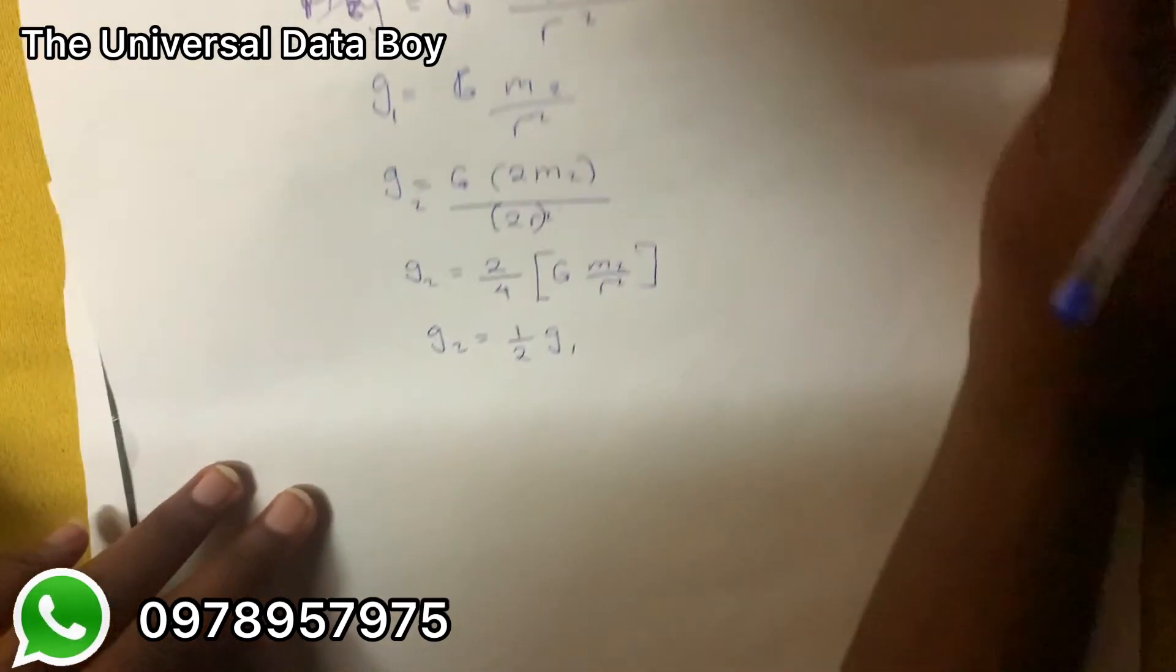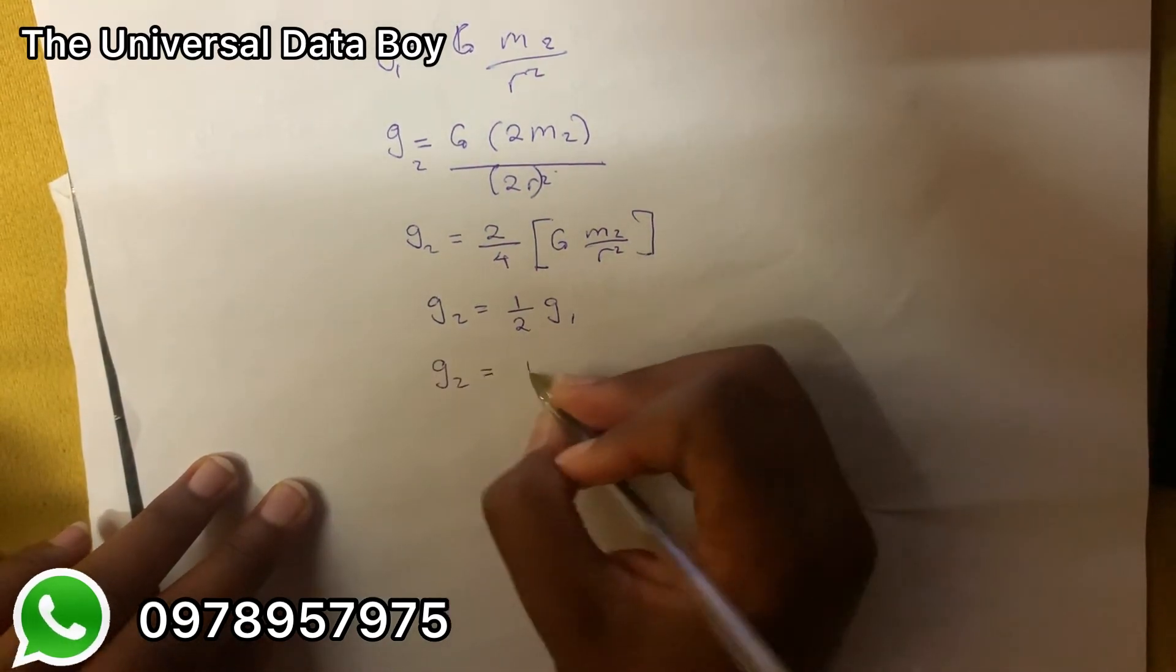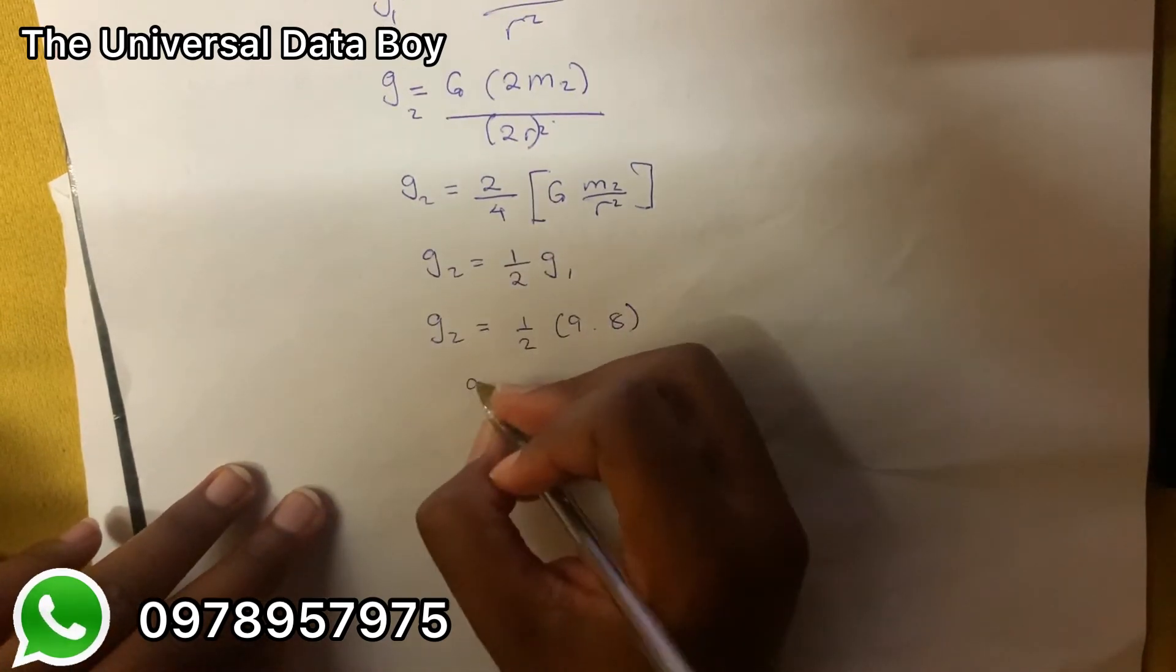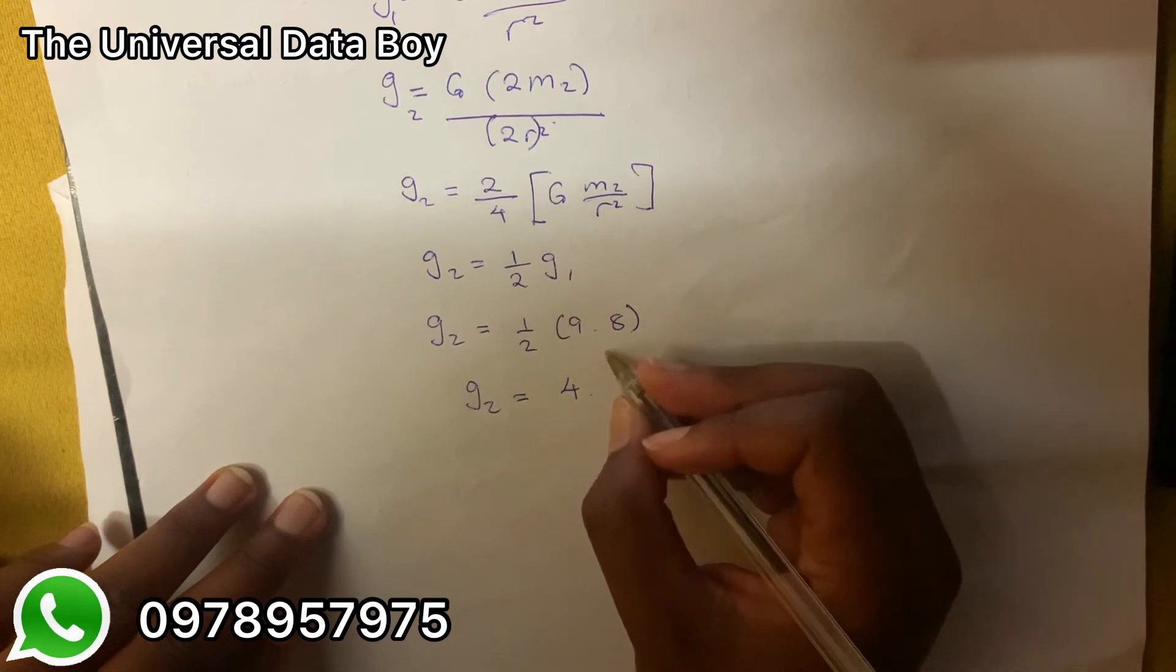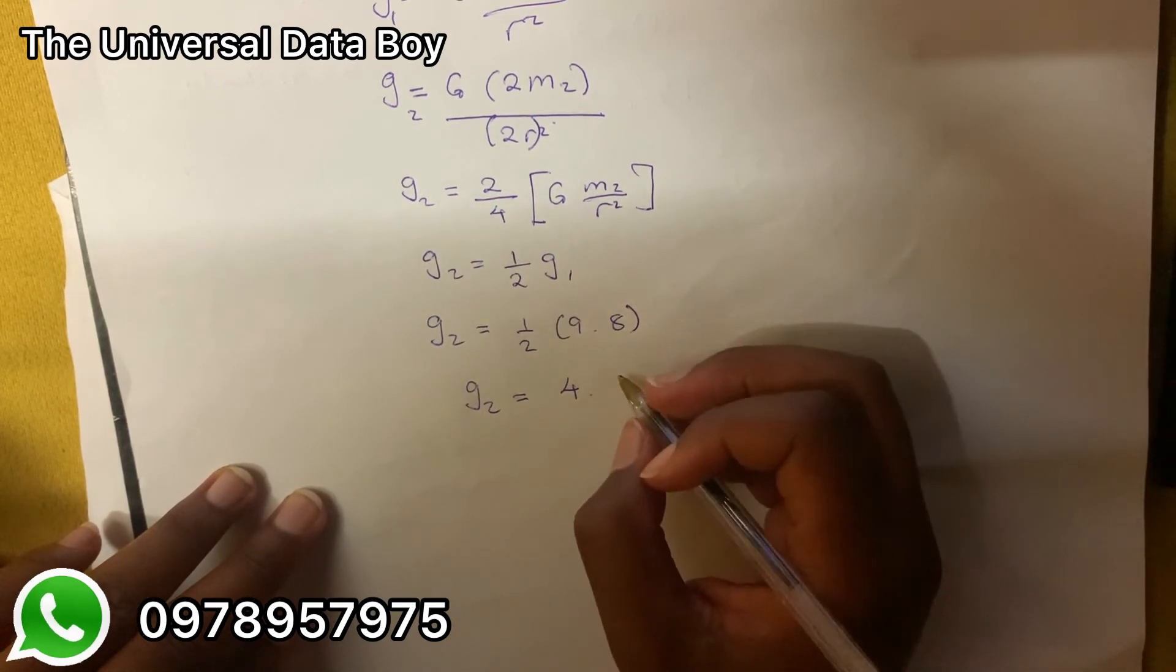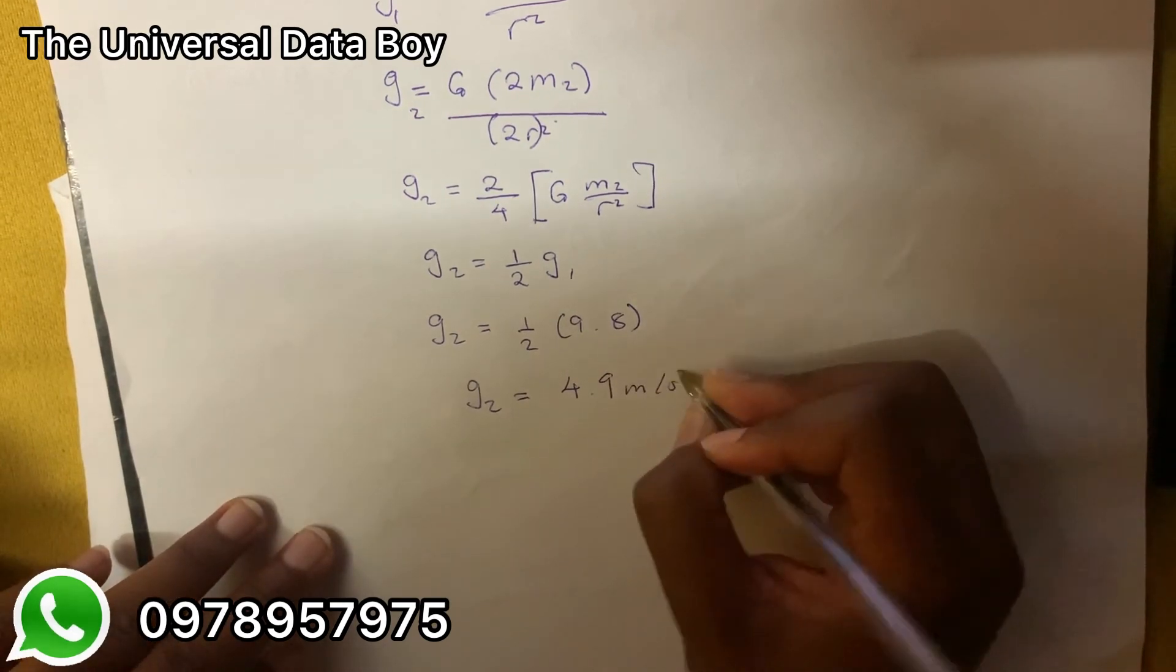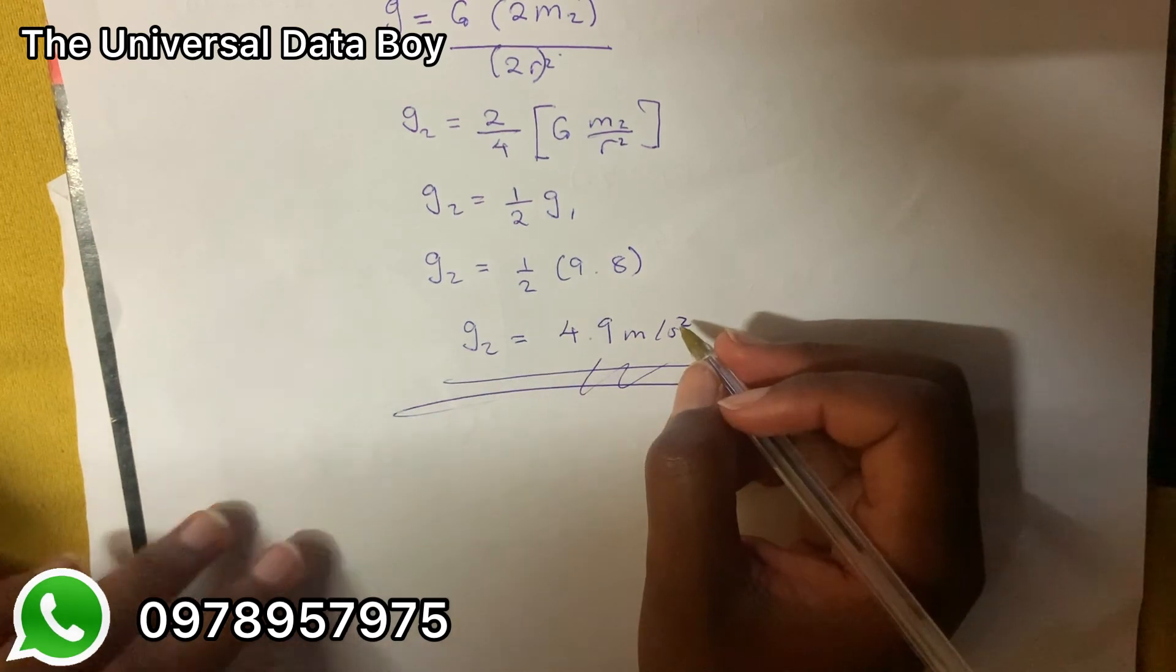Our acceleration due to gravity is g₁, so we're going to have g₂ being equal to 1 over 2 times 9.8. So g₂ is going to be equal to 4.9 meters per second squared. And that's how the gravitational acceleration would be.